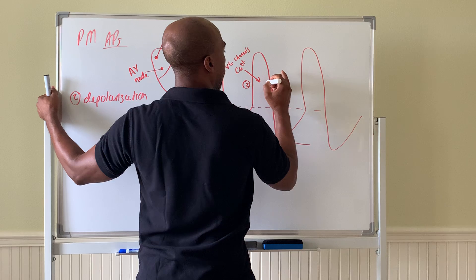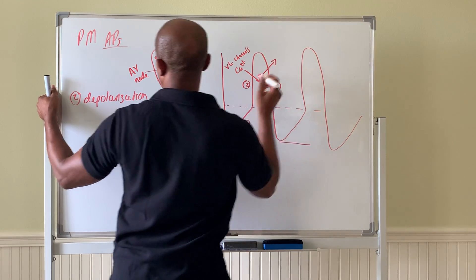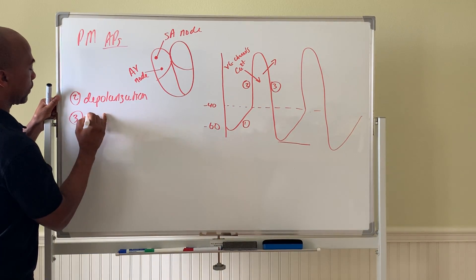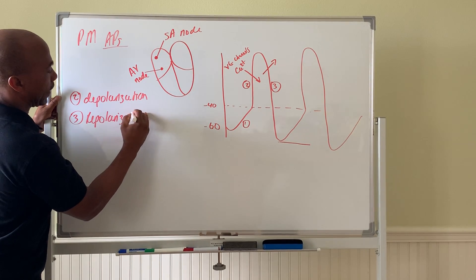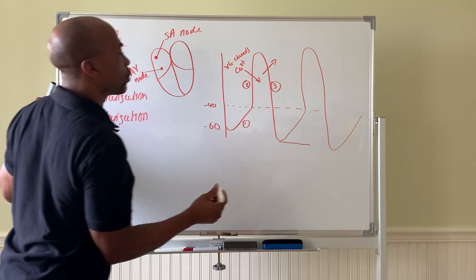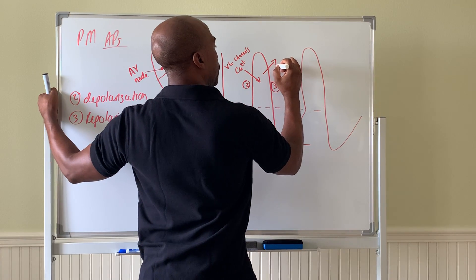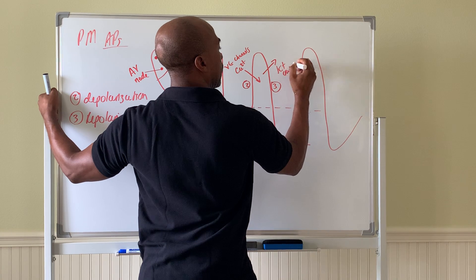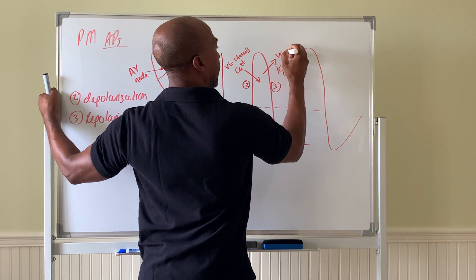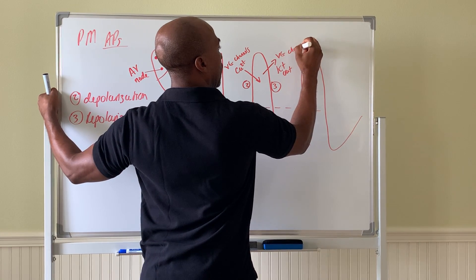This phase over here, phase three, of course, is your repolarization phase. This one is due, as usual, to potassium out through voltage-gated channels.